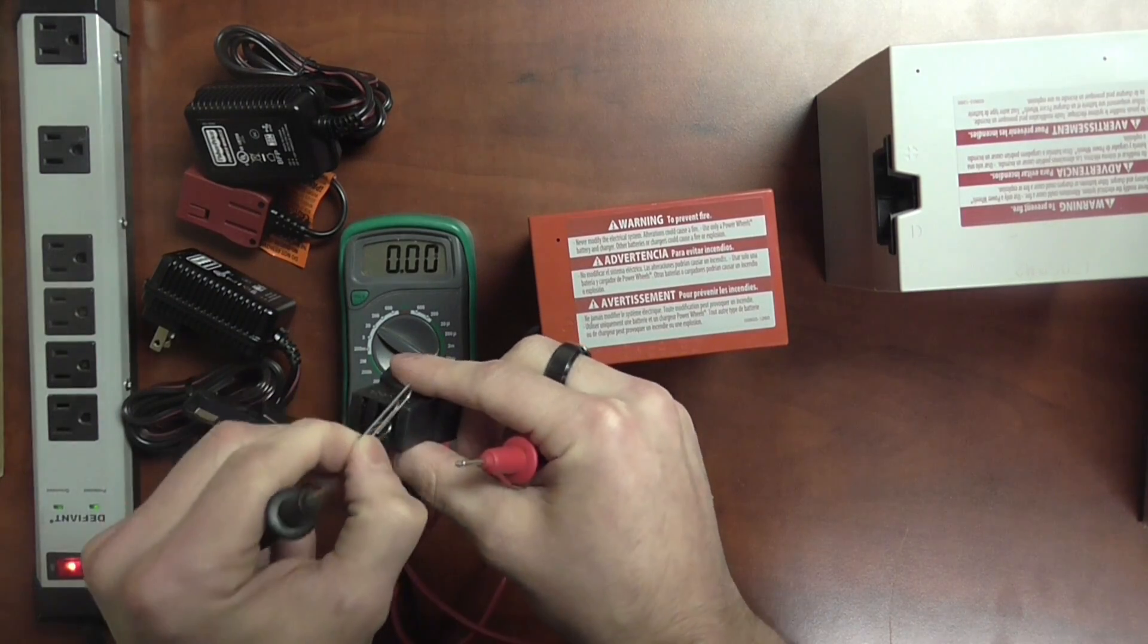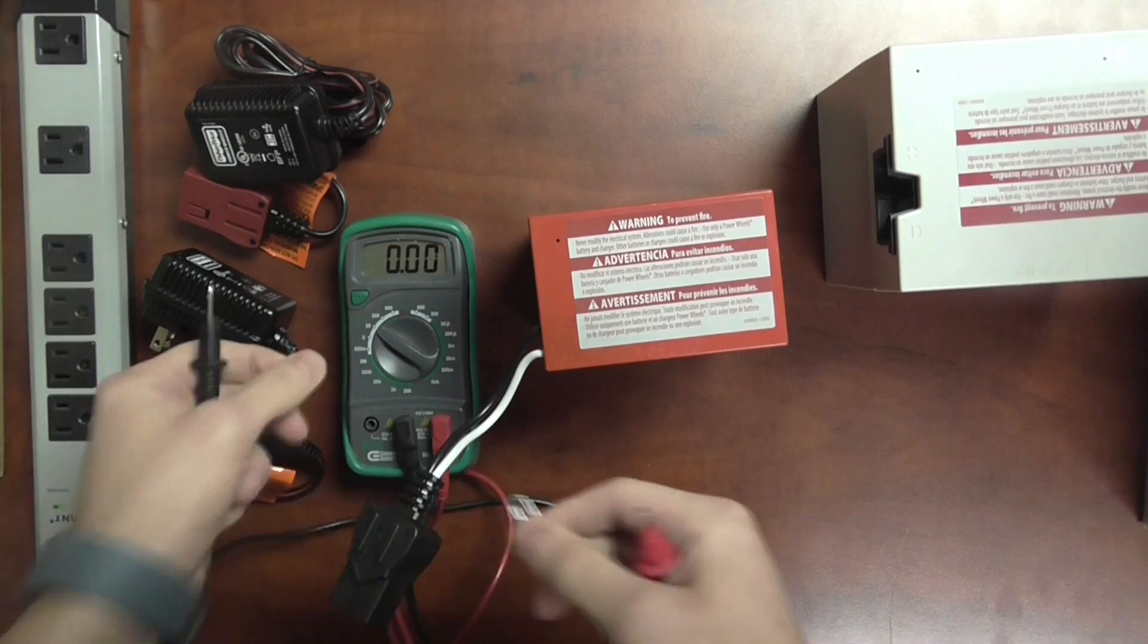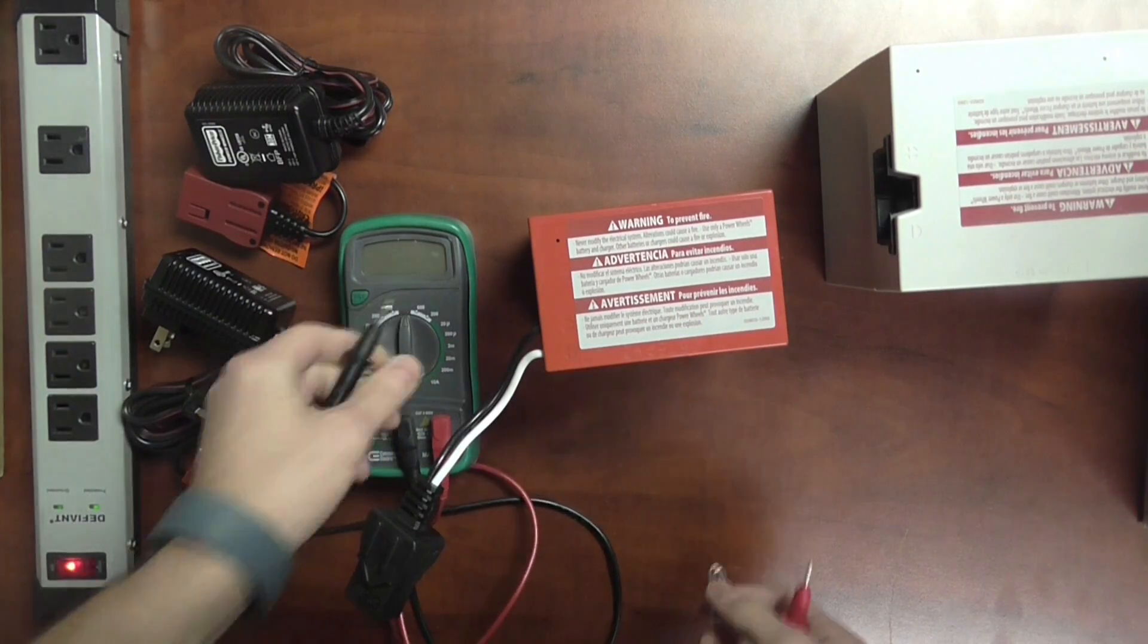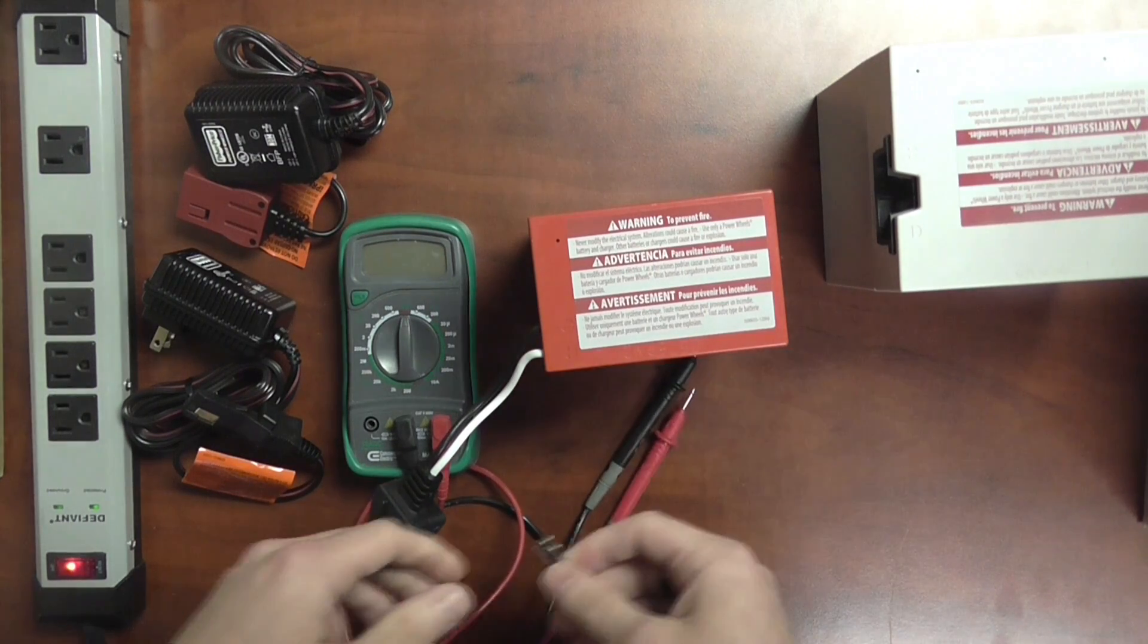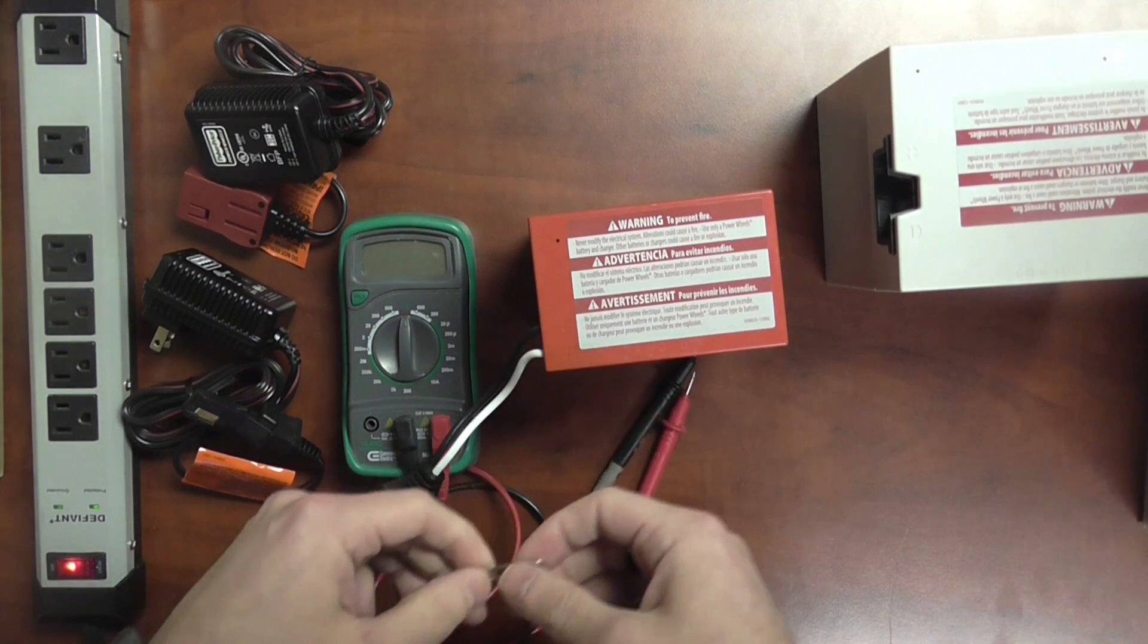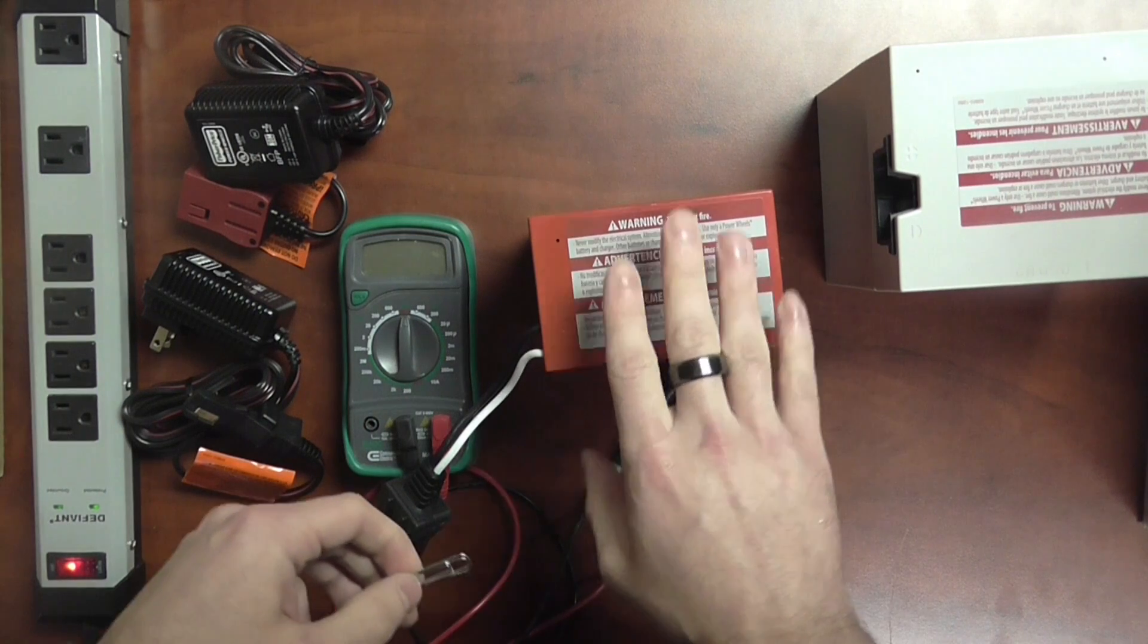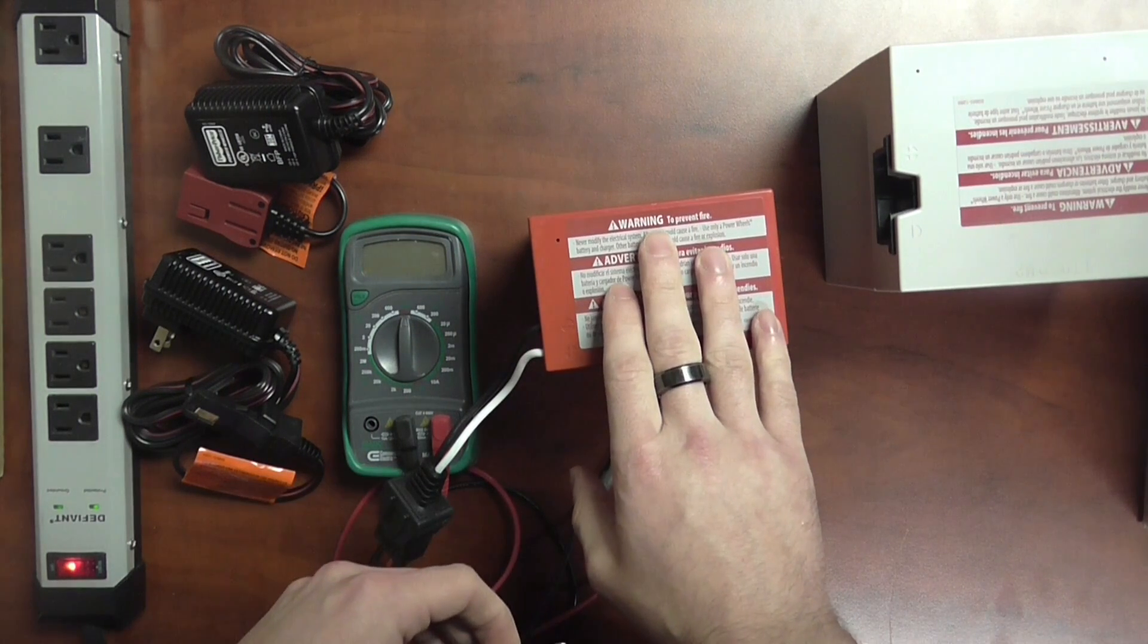So obviously we don't have any used stuff so I can't really show you what a bad one looks like. But for a 6 volt battery, when you get down below the 5 volt range you're going to be starting to see a little bit of trouble with the charger trying to charge the battery. You're in the 4s and the 3s, it's time to really think about replacing the battery itself.